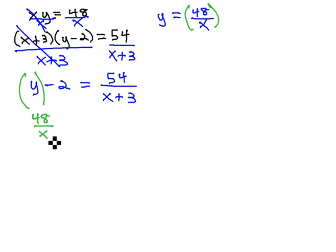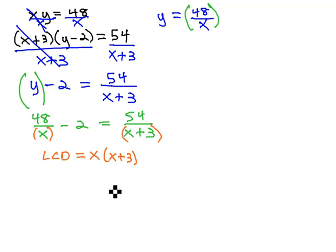We get forty-eight over x minus two equals fifty-four over x plus three. When we do this, we've created a rational equation. We can solve by multiplying by the least common denominator of x times x plus three. Multiplying by x times x plus three by every term on both sides, including the one that's not a fraction. We multiply by every term, not just the fractions.